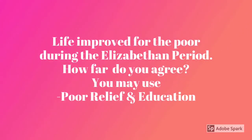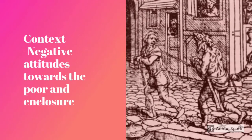So today we're going to be addressing this question: 'Life improved for the poor — how far do you agree?' We've been given the stimuli of poor relief and education. Now you don't have to use these if you don't want to, and if you've got these in an exam I would advise that you cross them out and put something in there that you did know about. We're going to be focusing on work and unemployment, help available to the poor, and access to education, determining whether or not these factors meant that life improved for poor people or whether it actually got worse.